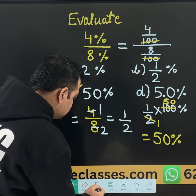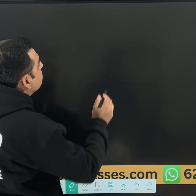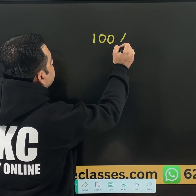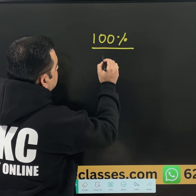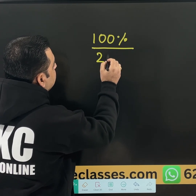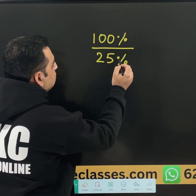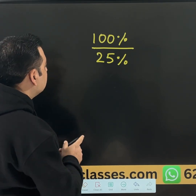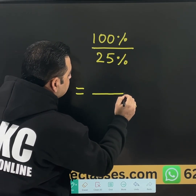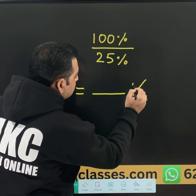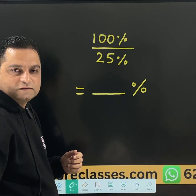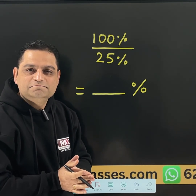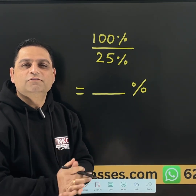I am giving you one question for practice. Let us suppose you have 100% over 25%. You need to find its answer in percent only — a blank is there which you need to fill. Thank you so much for watching the video.